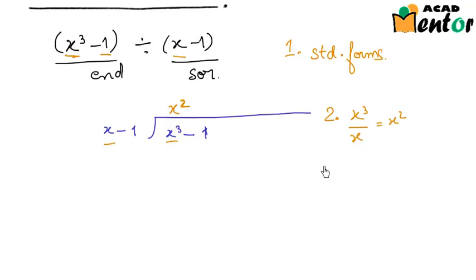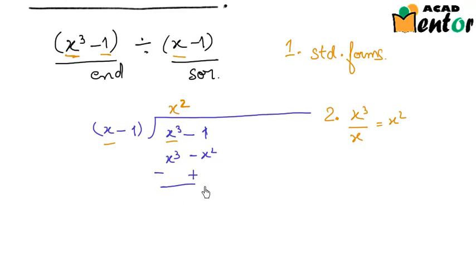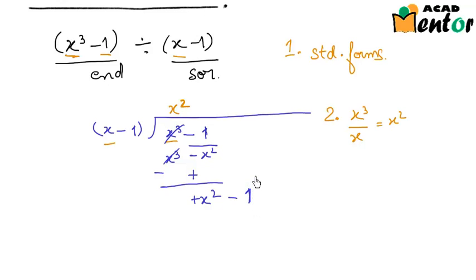The third step was to multiply x squared — the first term of the quotient — by the complete divisor. x squared times x gives x cubed, and x squared times minus 1 gives minus x squared. Then I subtract this expression from the dividend: the signs change, x cubed minus x cubed cancels, and I'm left with plus x squared. There's no x squared term remaining above, so I bring it down along with minus 1, giving a new dividend of x squared minus 1.